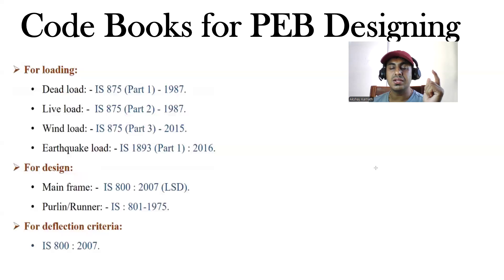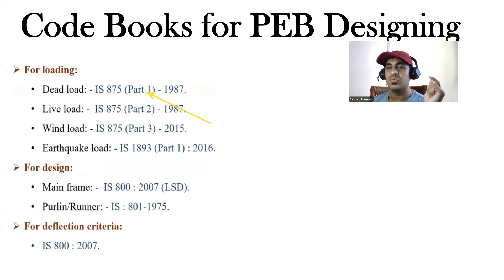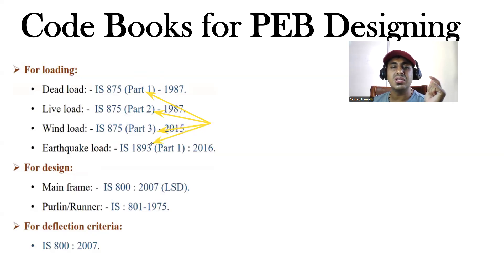For dead load, also called self-weight of materials, the code is IS 875 Part 1. For live load it is IS 875 Part 2, for wind load it is IS 875 Part 3, and for earthquake load it is IS 1893 Part 1 (2016). If you are following ductile detailing clauses, refer IS 13920.